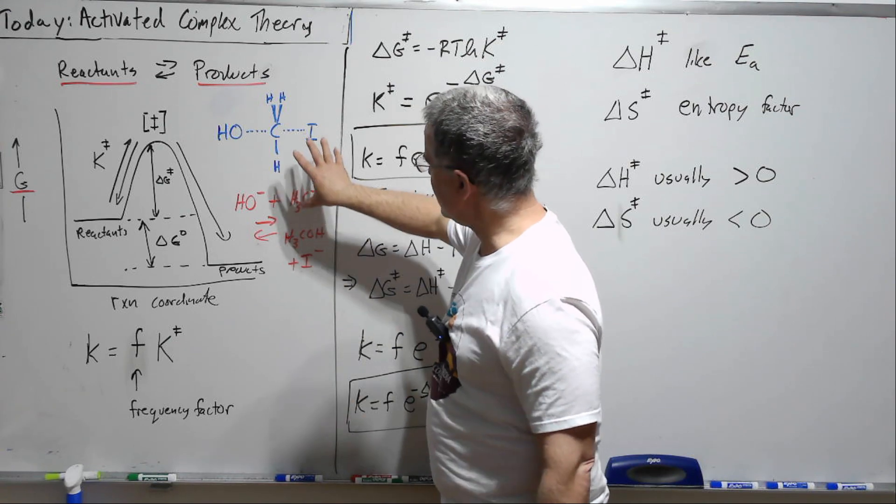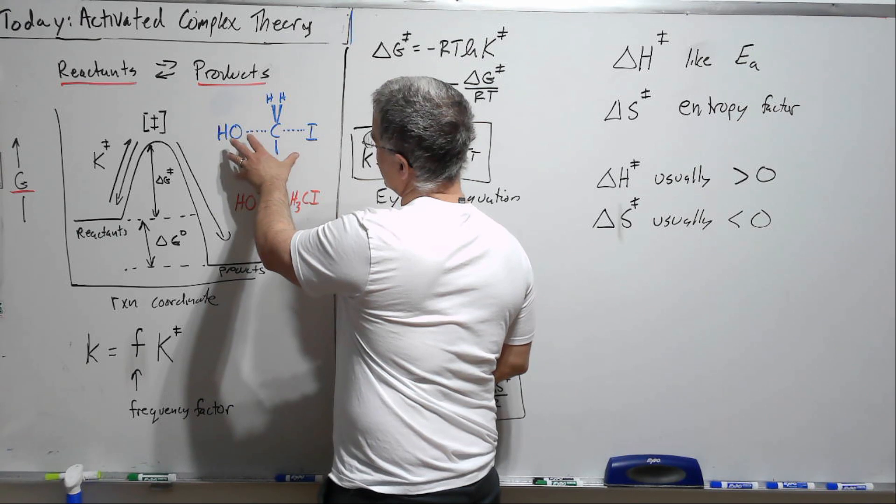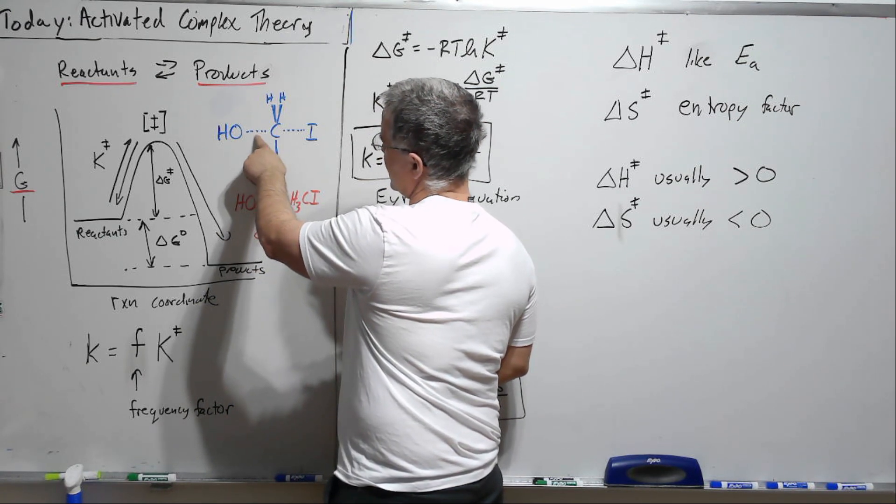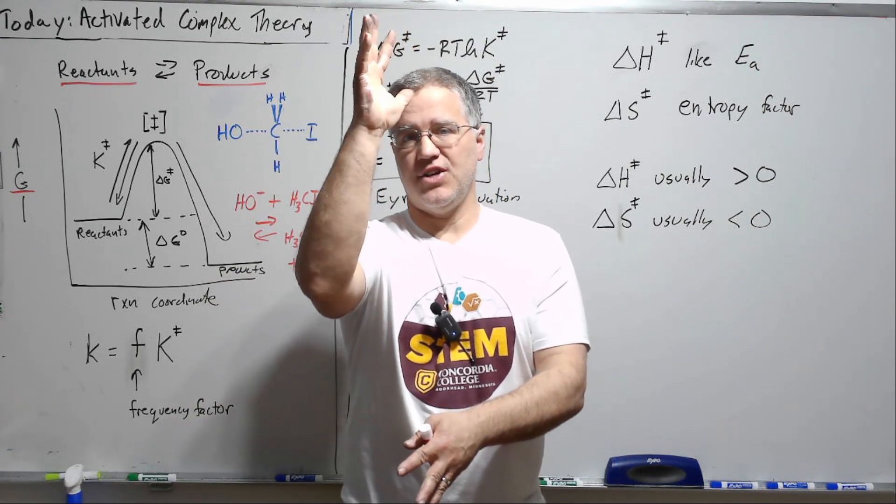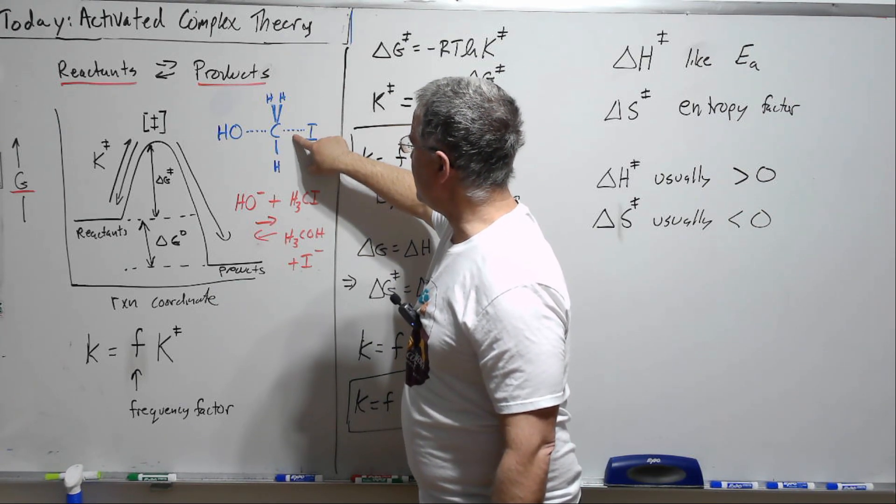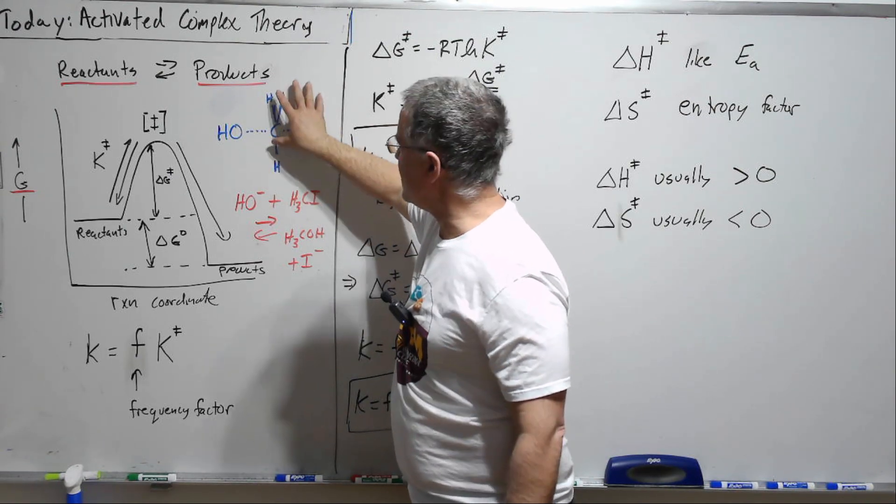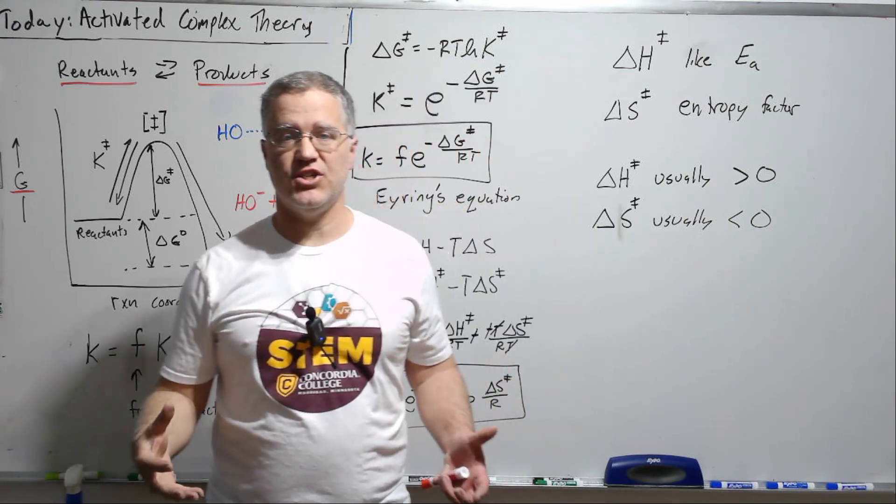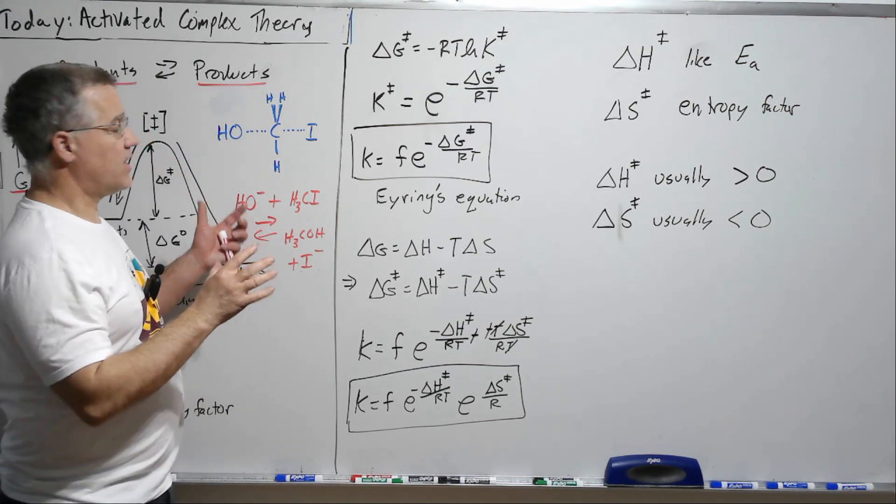And so let's take this example as the case. So as this reaction happens this OH comes in and starts to bond with the carbon, that presses these hydrogens up and the iodine starts to break its bond. So there's this intermediate state, well not even this, this activated complex, so this is the activated complex of highest energy. This is not a situation this molecule wants to be in.